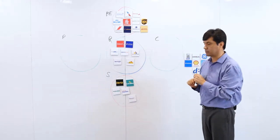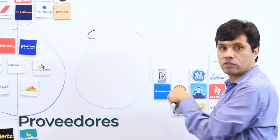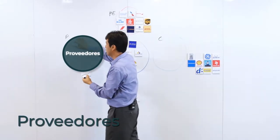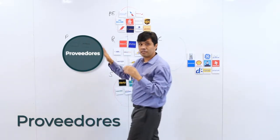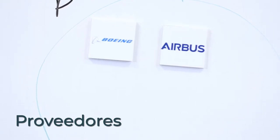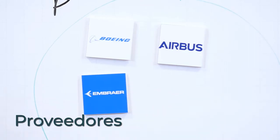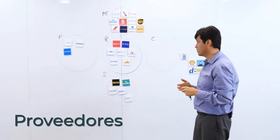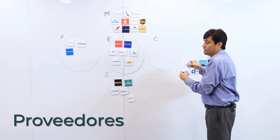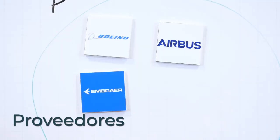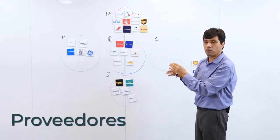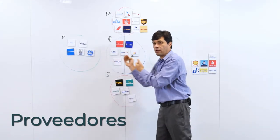Hablemos de los proveedores. Obviamente tenemos que pensar en los que hacen los aviones. Aquí hay varios ejemplos: Boeing y Airbus, que son las empresas más grandes productoras de aviones en el mundo. Hay empresas más pequeñas, como es el caso de Embraer. Pero también son importantes los que hacen los motores de los aviones, donde encontramos empresas como Rolls-Royce o General Electric. Ellos hacen los motores de aviones y se convierten también en proveedores de estas empresas.